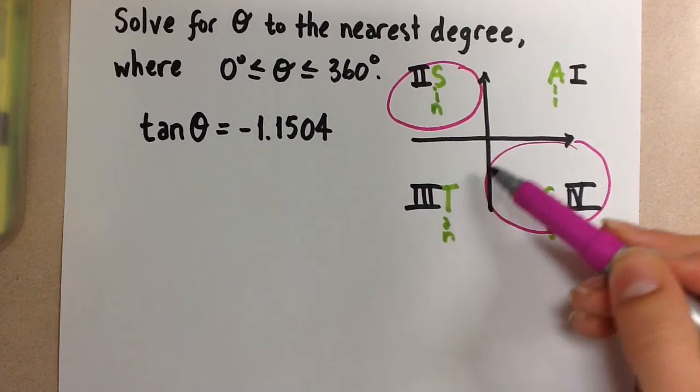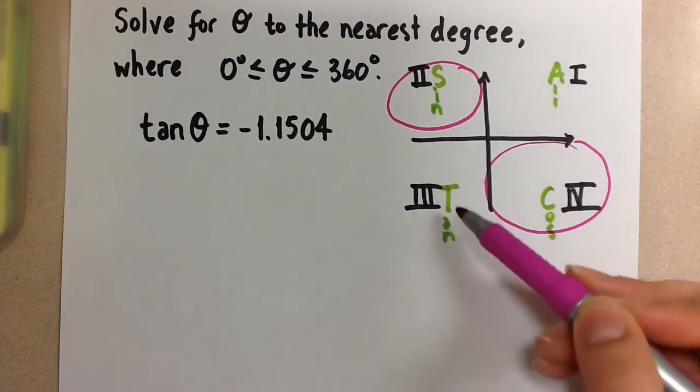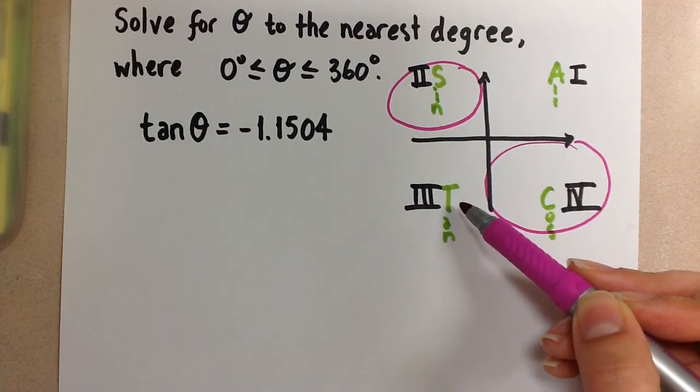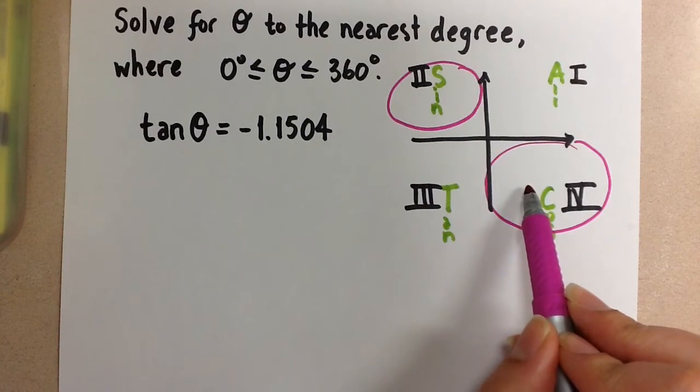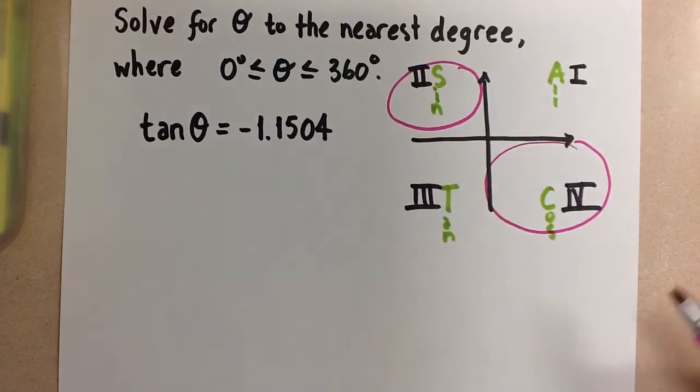The tangent ratio is positive in the first quadrant and in the third quadrant, according to the CAST rule. So we know the two angles we're going to find are in the fourth and in the second quadrant here.